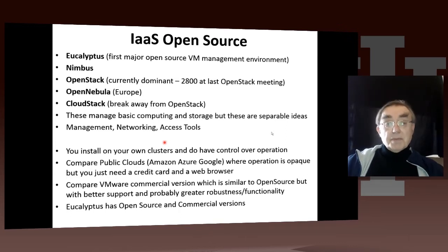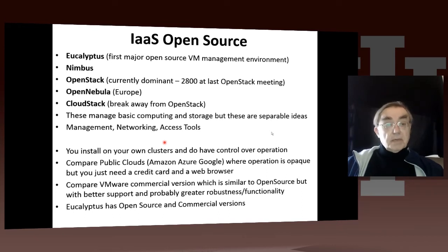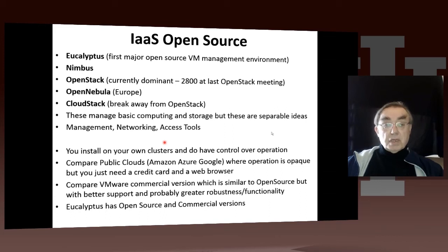Active open source efforts like OpenStack have a pretty dynamic world. In fact, there were 2,800 people at the 2013 OpenStack meeting, so this is not a trivial field. Eucalyptus has both open source and commercial versions. OpenStack is itself open source, and many companies — like CloudStack — will tend to build on top of OpenStack and offer commercial robustifications and customizations.